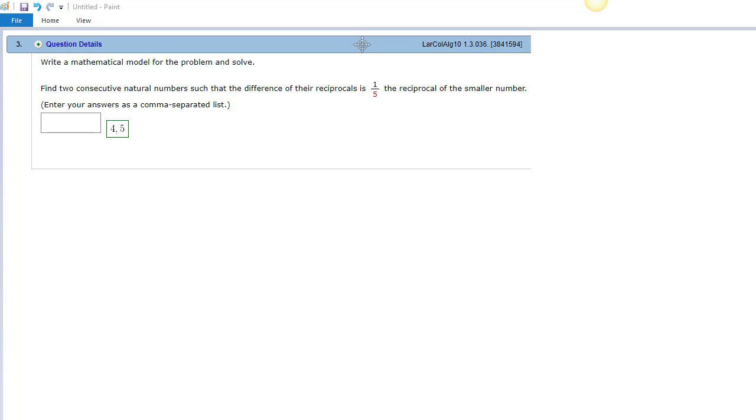With these word problems I really think it helps to organize our thoughts with a little table. We're going to try to find two consecutive natural numbers. Natural numbers basically means numbers that are positive and are integers, that the difference of the reciprocals is one-fifth the reciprocal of the smaller number.